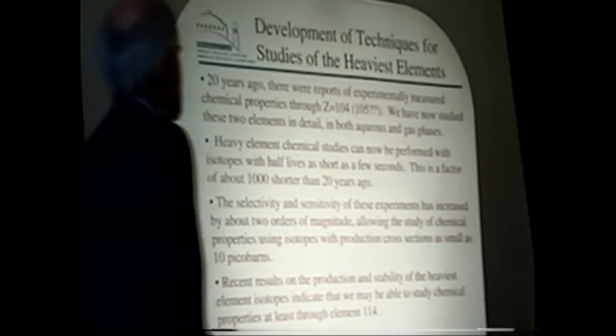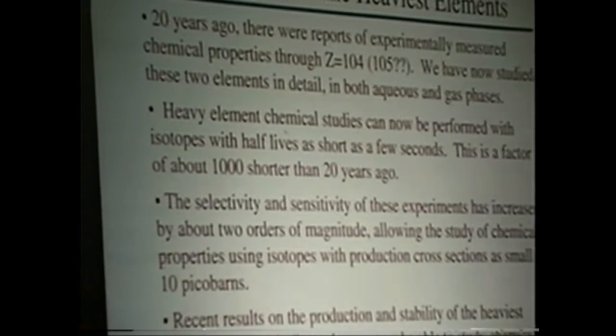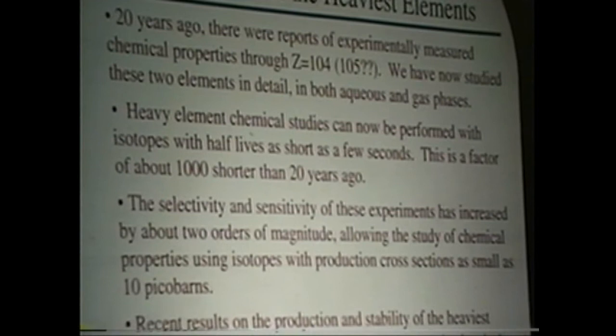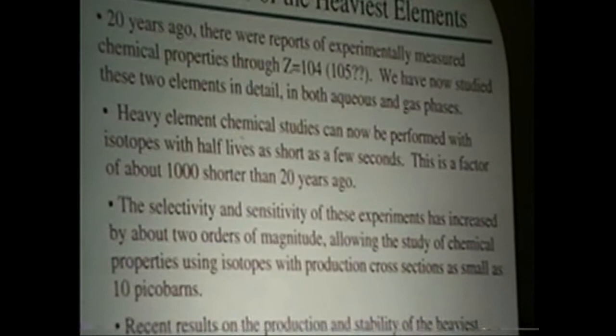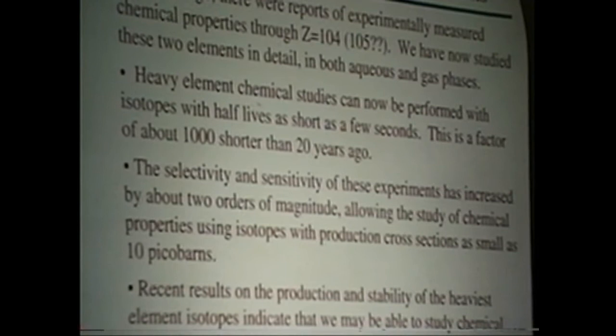20 years ago, for transactinide chemistry, there were reports of experimentally measured chemical properties through Z equals 104. A few reports in element 105 also, gas phase chemistry from Dubna. We've now studied 104, and these were really very basic preliminary studies. We've now studied these two elements in pretty good detail, in both the aqueous and gas phase.